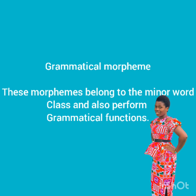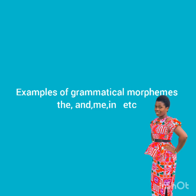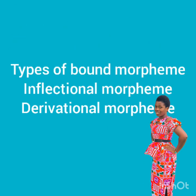Grammatical morphemes are morphemes that belong to the minor word class and perform grammatical functions. Examples include: 'the,' 'and,' 'me,' etc. Now, for bound morphemes, there are also two types: inflectional morphemes and derivational morphemes.